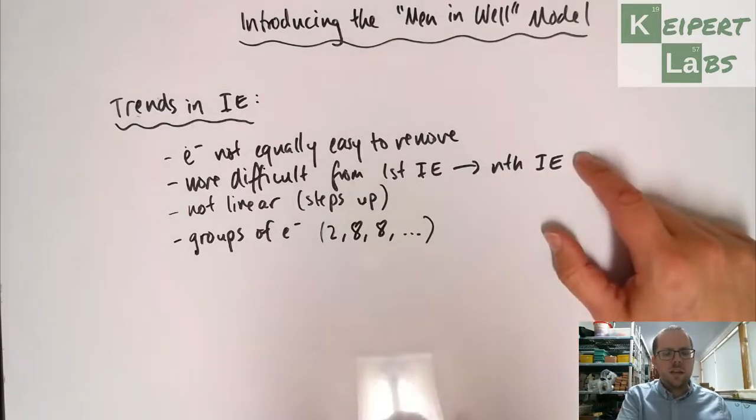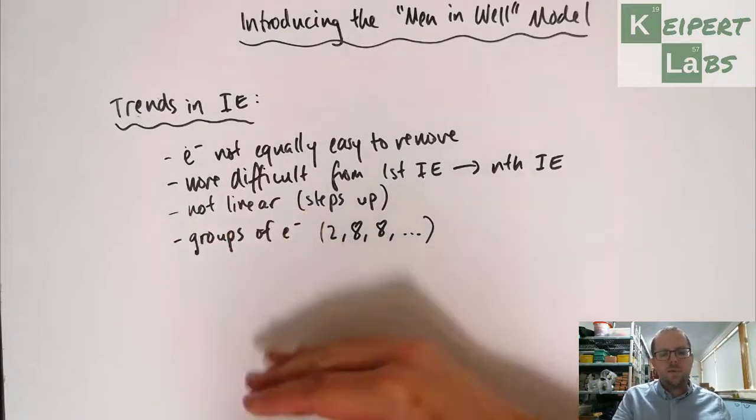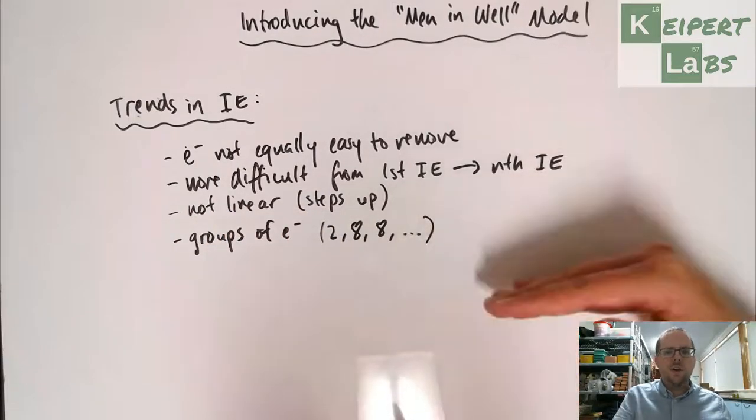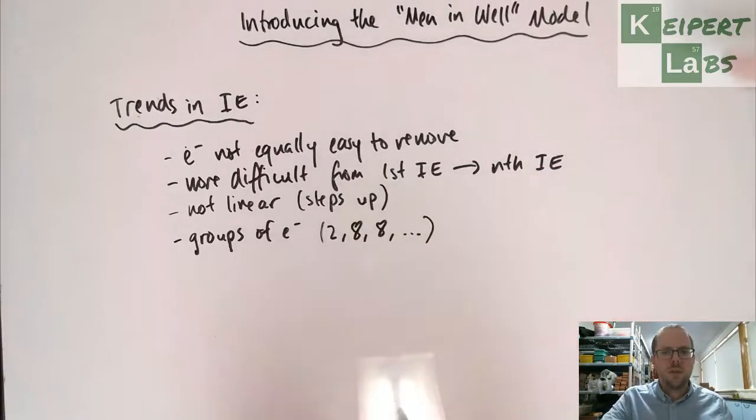Another thing that we've noticed is that this increase in difficulty is not linear, that it seems to step up. You get a couple that are similarly easy and then it jumps up to another level, and then it's similarly easy and then it jumps up to another level, with the last two always being significantly harder to remove than any other.